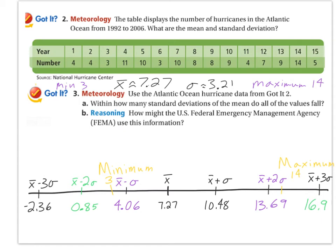All right so for this problem we want to find both the mean and the standard deviation. One thing to note here is that the year numbers we don't need for our data. So you'll just enter in the number of hurricanes as your list one and then you'll run the one variable statistics on that. When you do you'll get a mean of about 7.27 and a standard deviation of about 3.21.